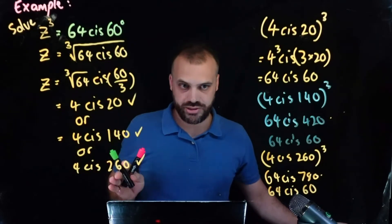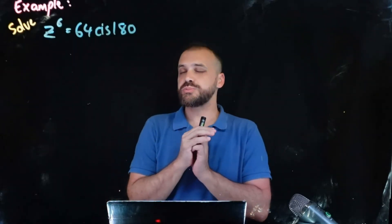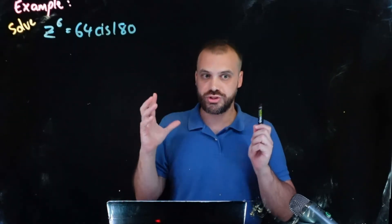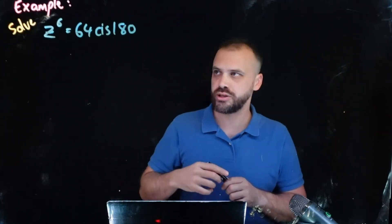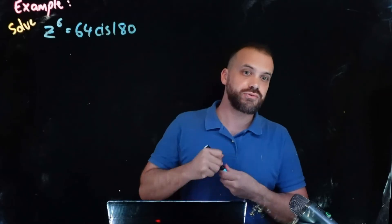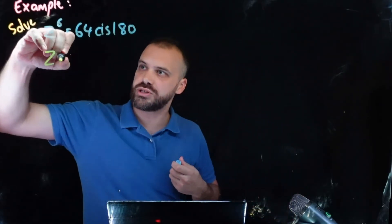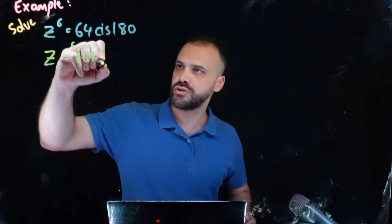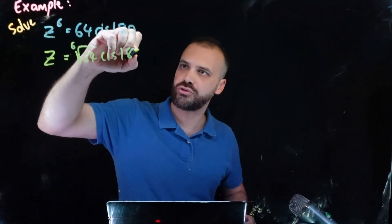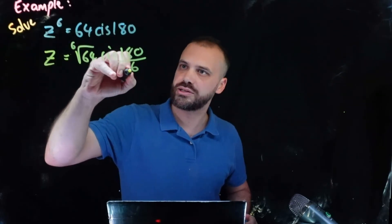Okay let's get rid of all this. So another example and I've always been frustrated by how difficult students are finding these. So I want to show you how fast it should be. z to the 6 equals 64 cis 180. So z is equal to the 6th root of 64 cis 180 divided by 6.